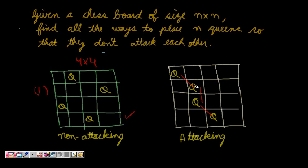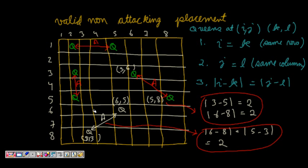In this invalid configuration, two queens are on the same diagonal and two are in the same column, so they can attack each other — this is an attacking configuration. There can be multiple valid solutions and we have to print them all. Let's see what we mean by valid or non-attacking placement on an 8×8 chess board with 64 cells.